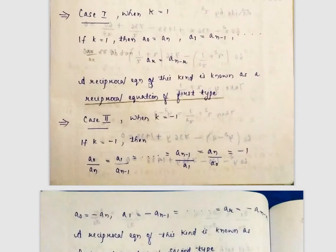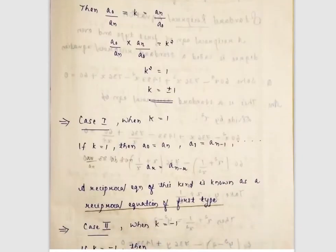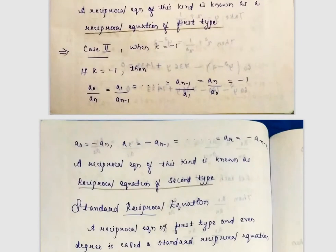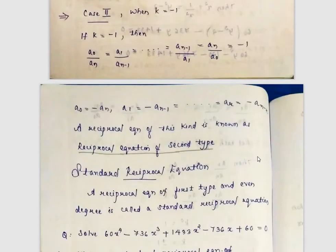The reciprocal equation of this kind — where the ratio equals k — is called the reciprocal equation of first type when k = +1, meaning a₀ = aₙ, a₁ = aₙ₋₁, etc. When k = -1, giving a₀ = -aₙ, a₁ = -aₙ₋₁, it is called a reciprocal equation of second type.